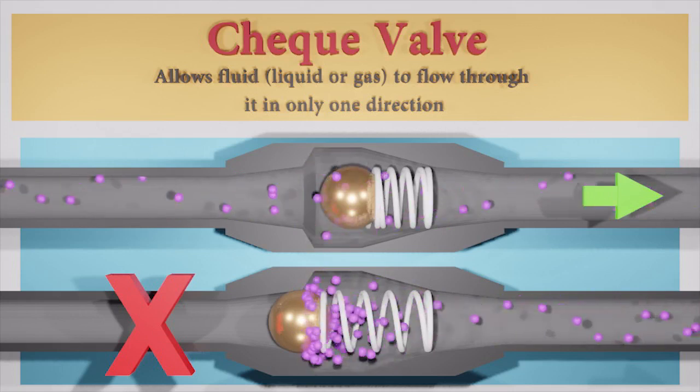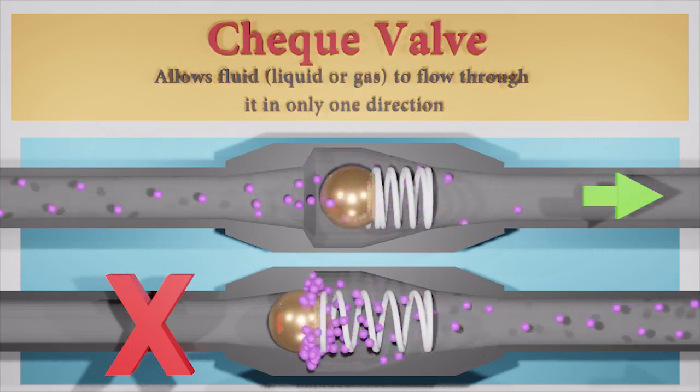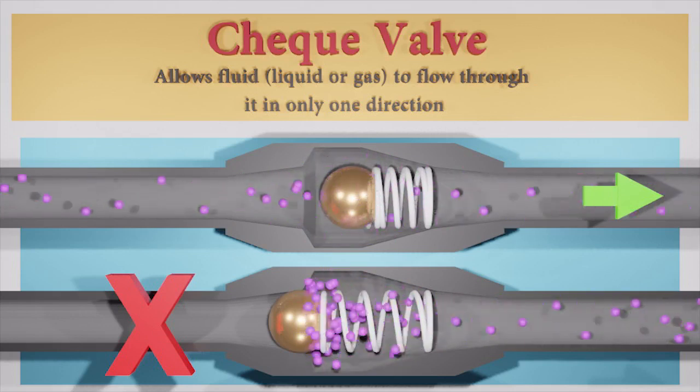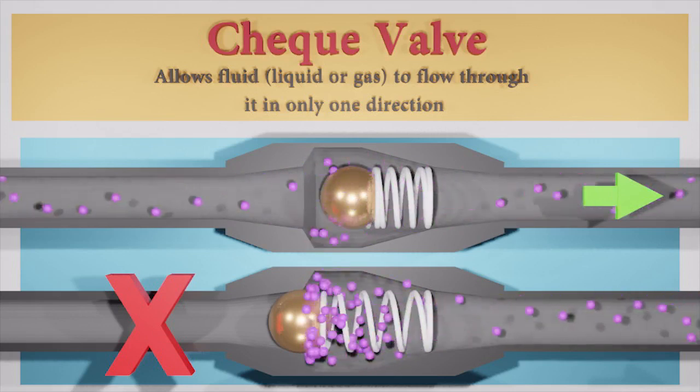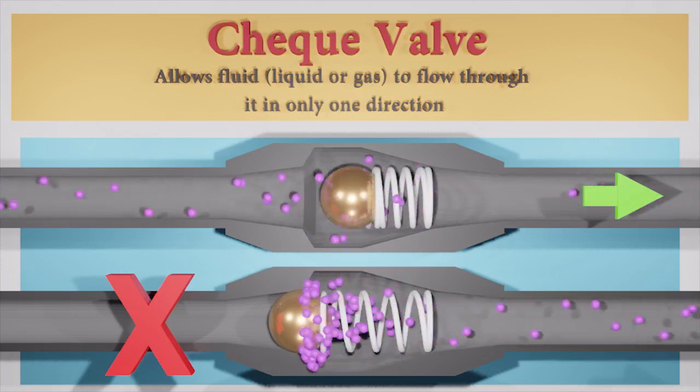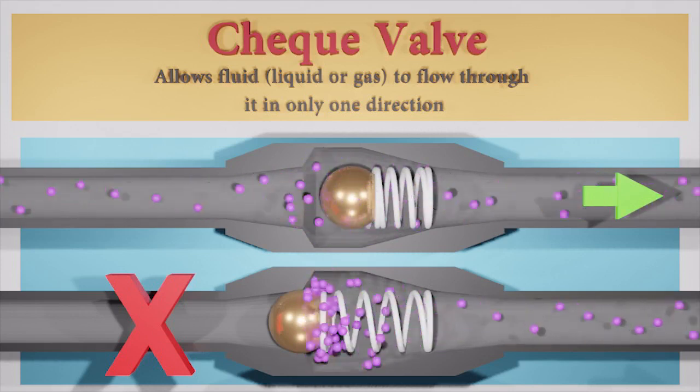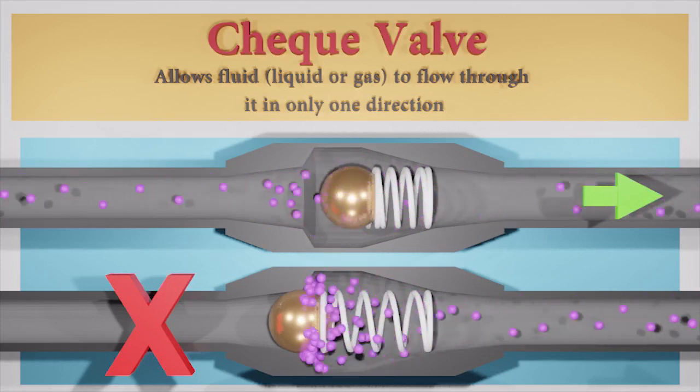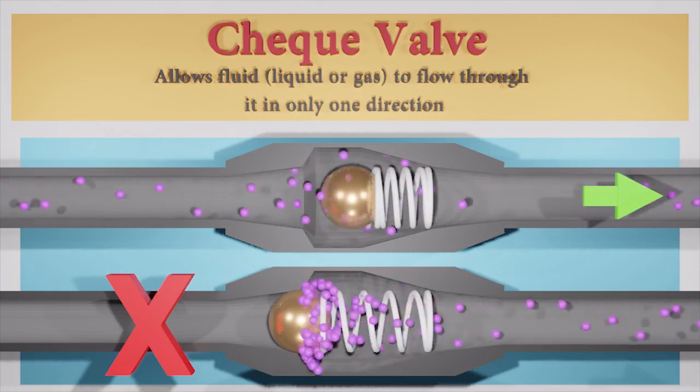Check valves are pressure-operated devices. They open and allow flow if the pressure across them is of the correct polarity to open the gate. If the pressure is of the opposite polarity, the pressure difference across the check valve will close and hold the gate so that no flow occurs.